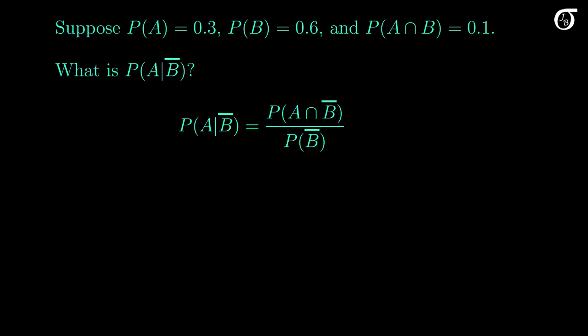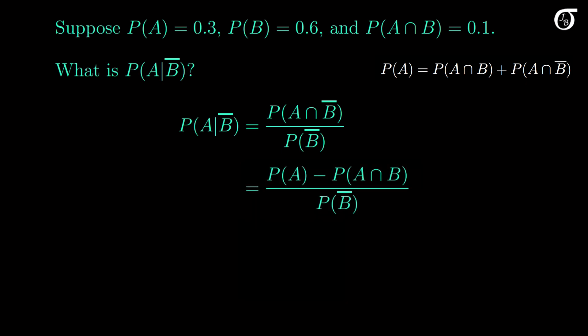It's very straightforward if we keep the rule we discussed today in mind. Since the probability of A is equal to the probability of the intersection of A and B, plus the probability of the intersection of A and B complement, the probability of the intersection of A and B complement is the probability of A minus the probability of the intersection of A and B. We have these probabilities, so we can easily work out the final answer to be one half.